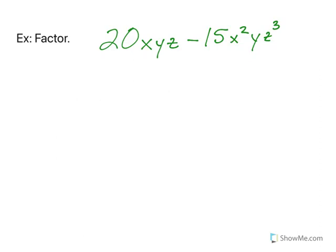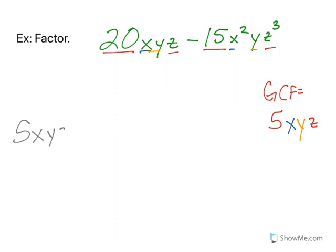Let's do one more just for fun. 20xyz minus 15x squared yz cubed. Start with my numbers. Finding the GCF. So 15 and 20 have a GCF of 5. Then I look at x and x squared x, y and y, z, z cubed z. So my greatest common factor is 5xyz. So 5xyz.